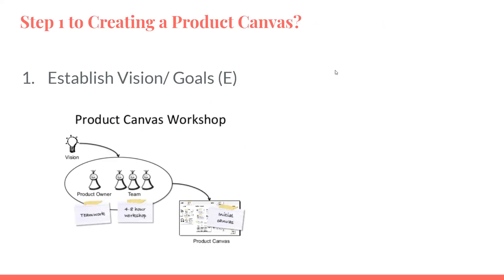Step one: establish the vision and goals. You set up your product canvas workshop and establish your vision and goals within it. Many times when the business creates objectives at a strategic level, it becomes important to take that next step and use the product canvas to translate what the business strategic objective means in terms of requirements. This really helps bridge the gap between the strategic vision of the business and what it actually means in terms of the product your delivery team is going to create.